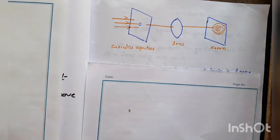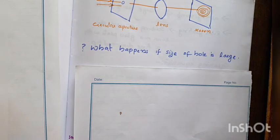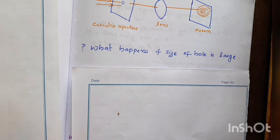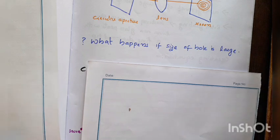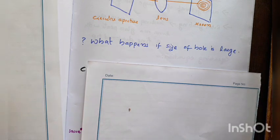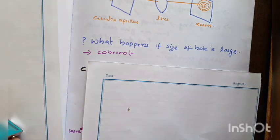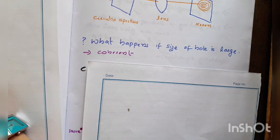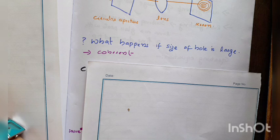What happens if the size of the hole is large? When the hole is large compared to the wavelength, there is no constant phase relationship between the points, and the diffraction pattern disappears. This is the reason why we say the size of the object causing diffraction must be comparable to the wavelength.